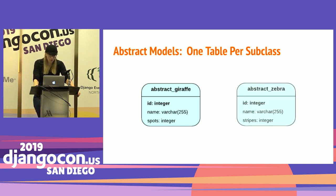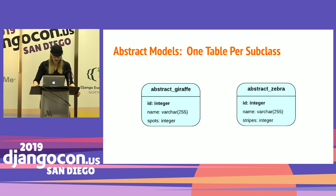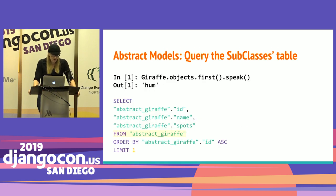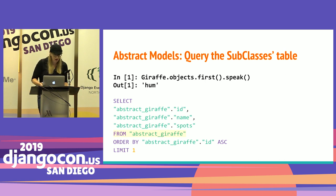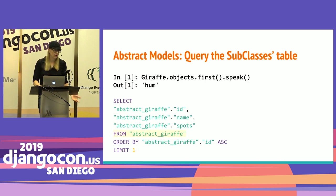If we subclass animal again with zebra, it would have that ID and name field, and then anything it adds like a stripe count. When we query for our giraffes, this queries against the abstract giraffe table. We can't query with animal.objects.all because that animal table doesn't exist. When we call speak on the giraffe, it returns 'hum' because we've overridden that method.